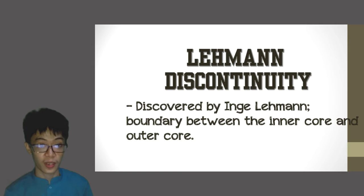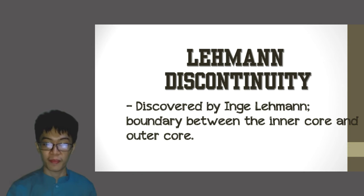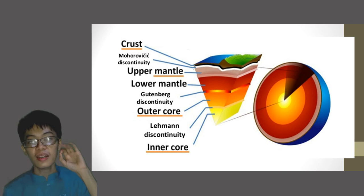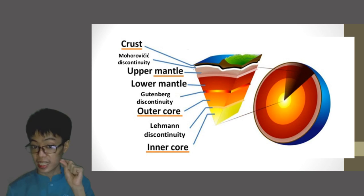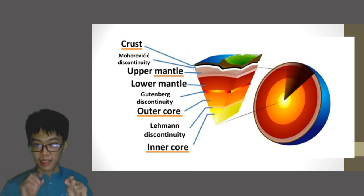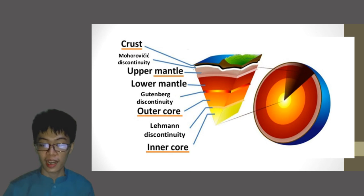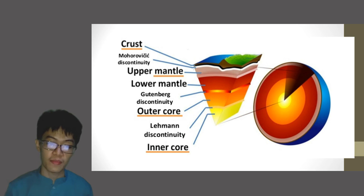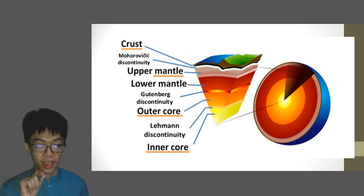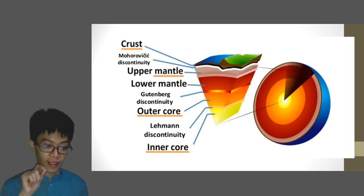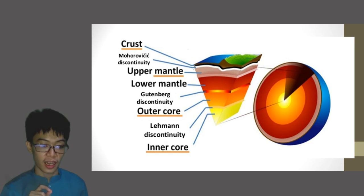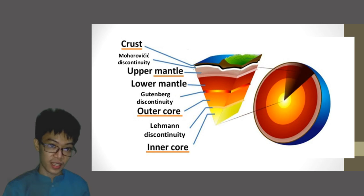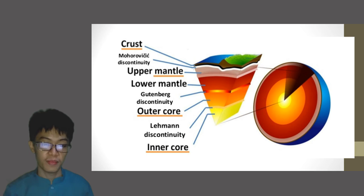Let's have a quick recap. From the top, we have the crust — the thinnest layer of the earth. Then we have the Mohorovičić Discontinuity, followed by the upper mantle and lower mantle. After that is the Gutenberg Discontinuity, then the outer core, then the Lehmann Discontinuity, and finally the inner core.